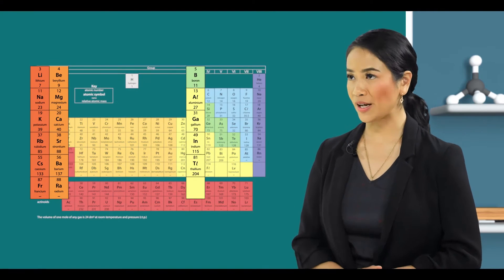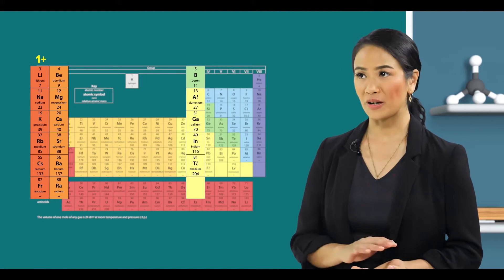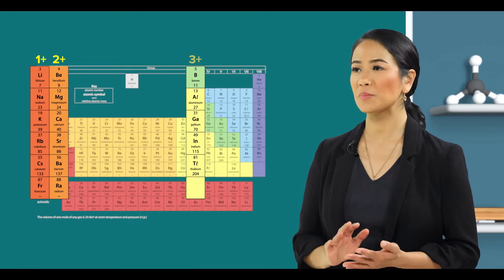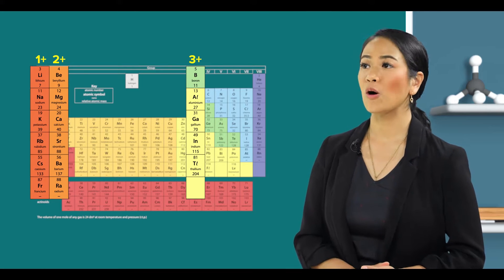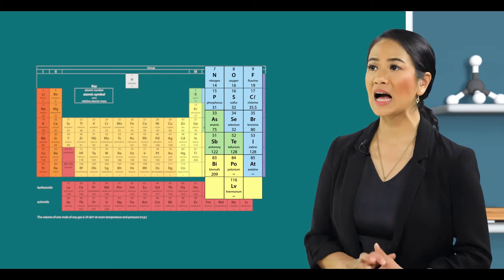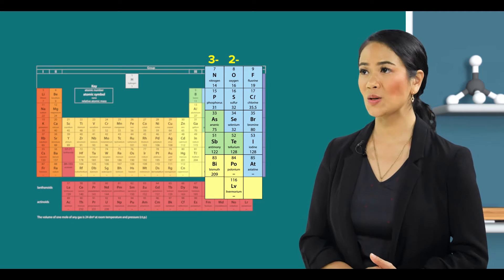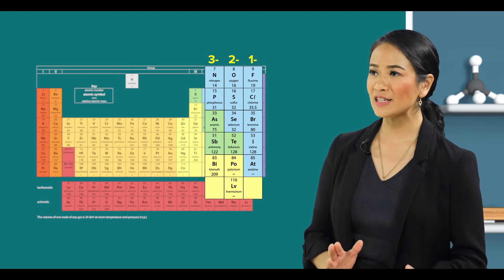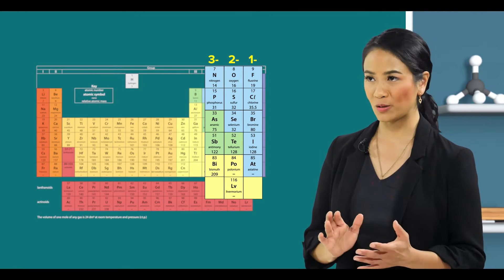Well, in general, for groups 1, 2, and 3, the charges will be plus 1, plus 2, and plus 3, respectively. For groups 5, 6, and 7, the charges will be minus 3, minus 2, and minus 1. This general rule is true most of the time.